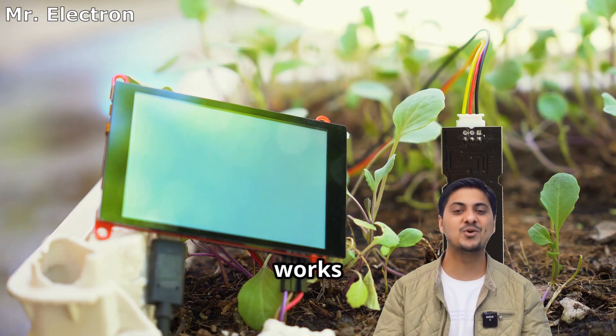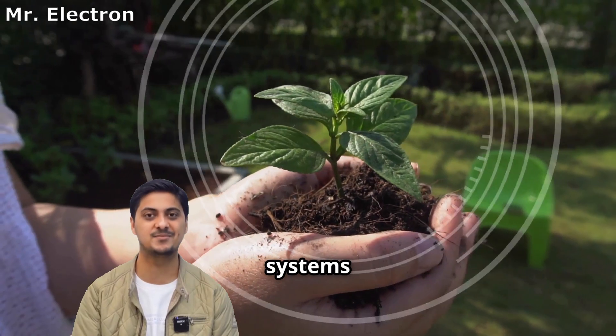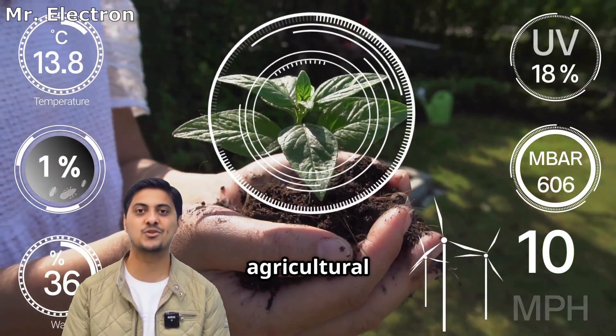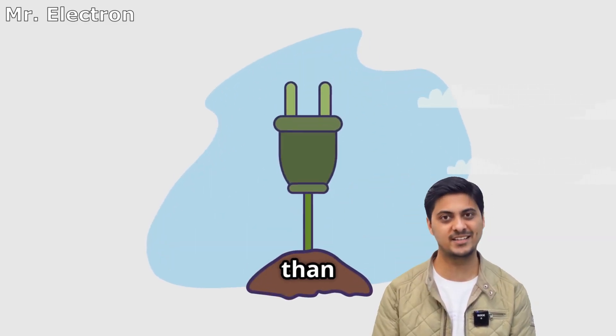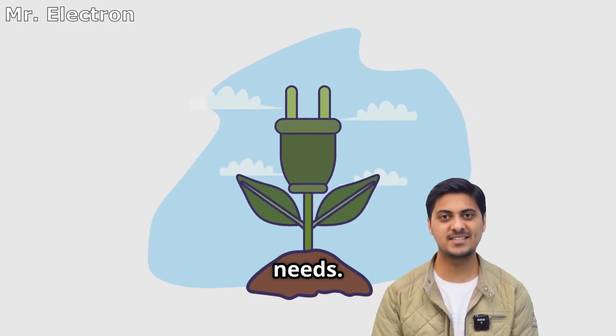Current technology works best for low-power applications like sensors and LED lighting. These systems excel at powering remote monitoring devices in agricultural and environmental applications. Long-term costs remain higher than conventional power sources, but eliminate battery replacement needs.